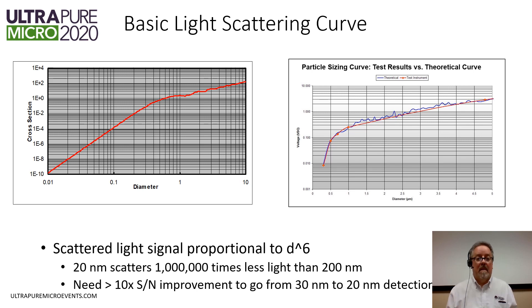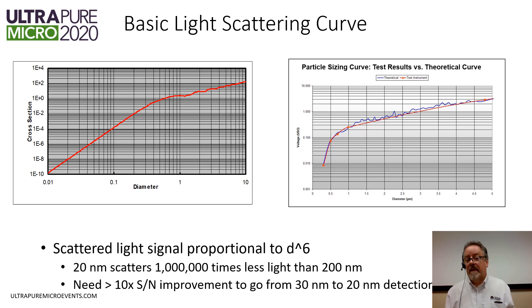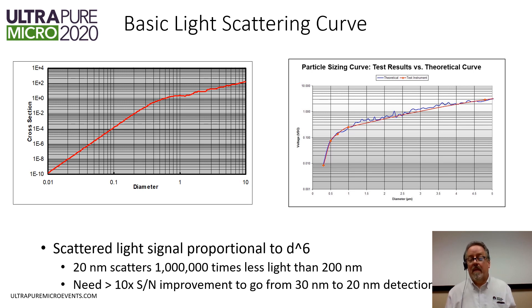You can see that in the scattering cross-section curve on the left, where diameter is in microns on a log-log scale, so it drops off very quickly. The detector signal in millivolts shows that once you get less than the wavelength of light — below about 500 nanometers — the signal drops off as diameter to the sixth power. Quick math: a 20 nanometer particle will scatter a million times less light than a 200 nanometer particle. And even going from just 30 nanometers down to 20 nanometers, you still need more than a 10x improvement in signal-to-noise to be able to see that particle. As the particles get smaller, the signal drops off very quickly.